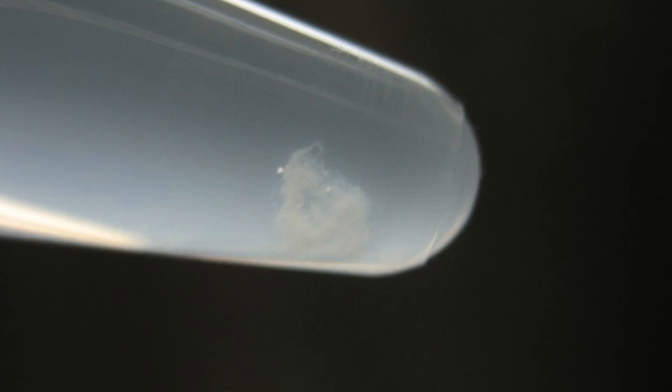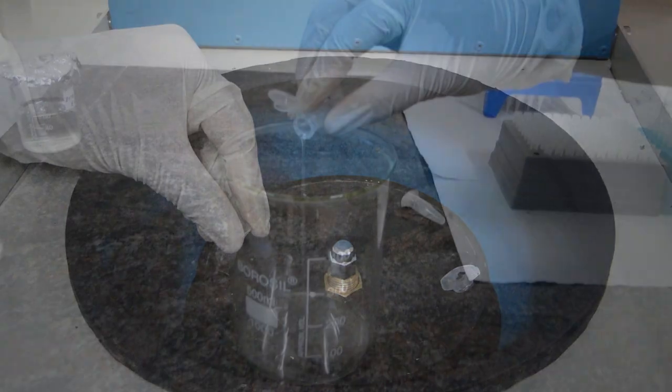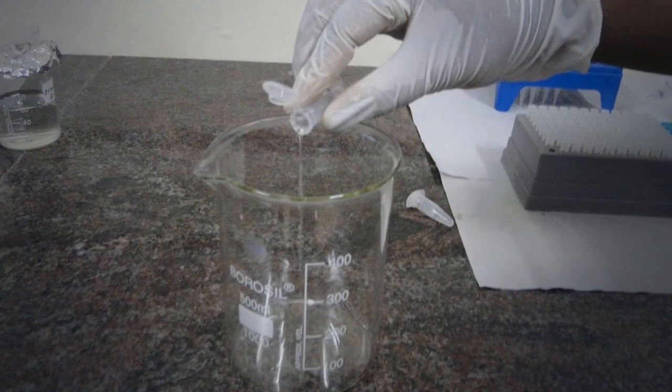Tap the tip of the vial. Now, the DNA strands will be visible when seen against light. Centrifuge it for 10 minutes at 10,000 RPM. Decant the ethanol or pour off the supernatant to get the pellet.